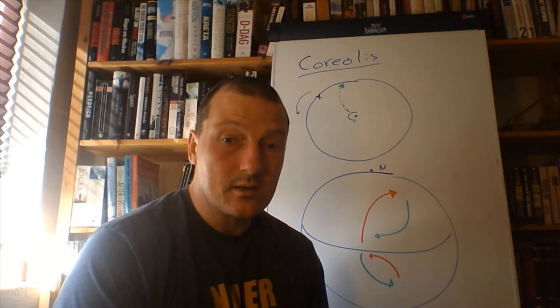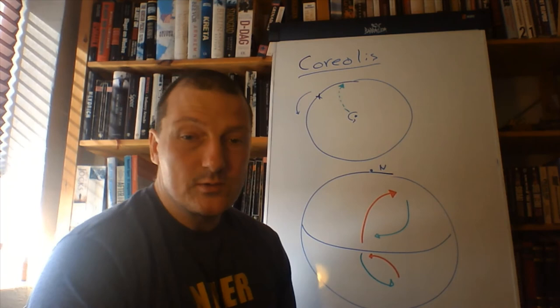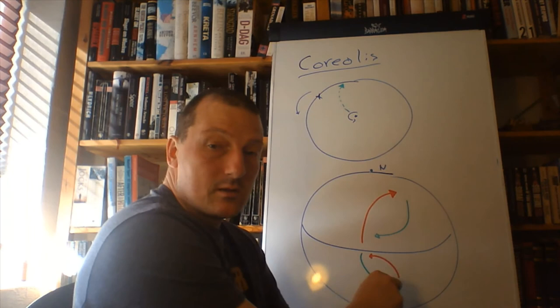So, as we'll see later, this Coriolis effect leads to some very important global wind patterns, which then drives the currents we see. What's important for you to know is that we generally see a deflection this way here, on the northern hemisphere, and the other way around on the southern hemisphere.